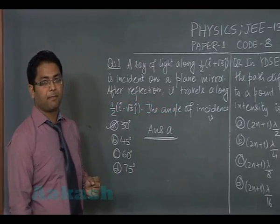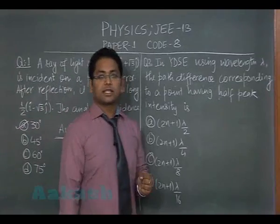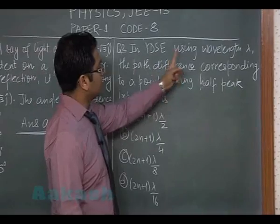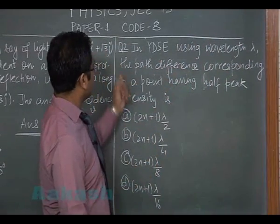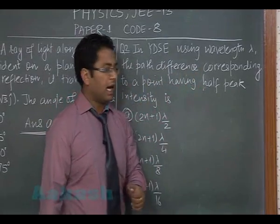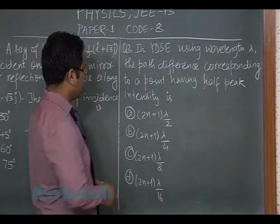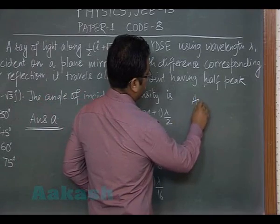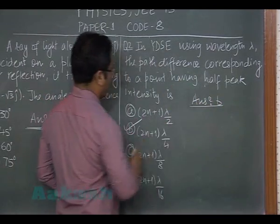Question number two is drawn from wave optics — YDSE using a monochromatic wavelength lambda. The path difference corresponding to a point having half the peak intensity is to be found. The answer would be option B. Let's see how we arrive at option B.